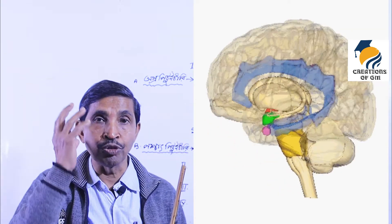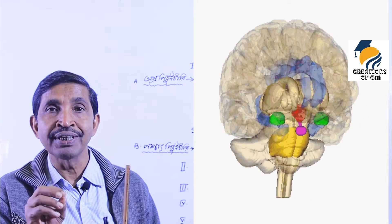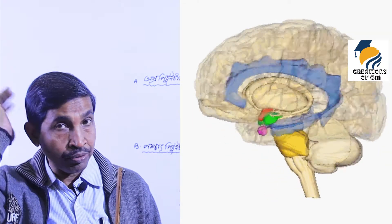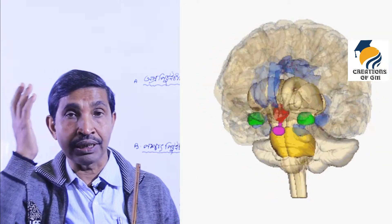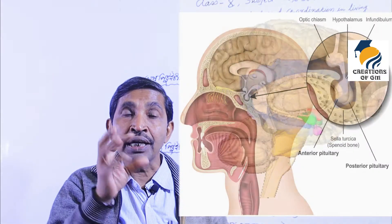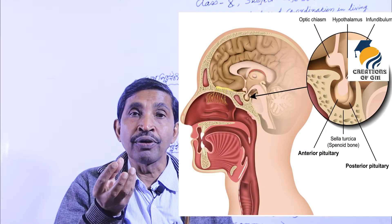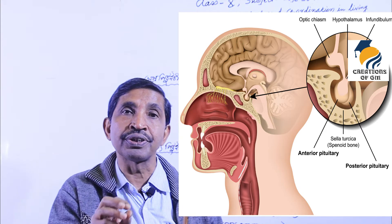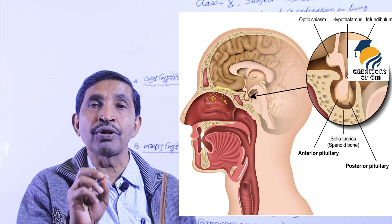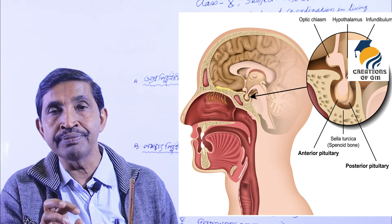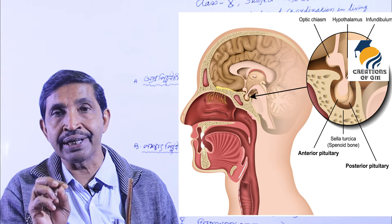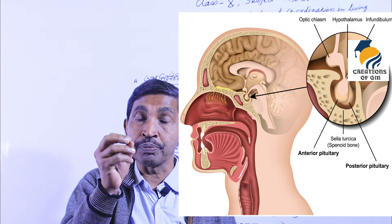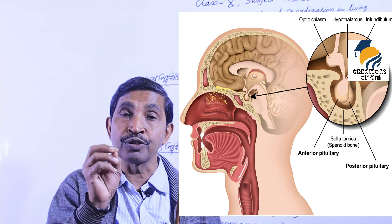In our human brain, at the base, there is a cell called sella turcica. The sphenoid bone — the bone of the skull — contains a structure called sella turcica. Inside the sphenoid bone's sella turcica cavity, which is the third ventricle cavity of the brain, the pituitary gland is located.